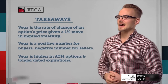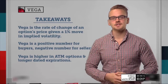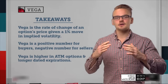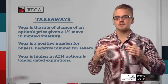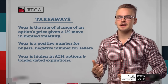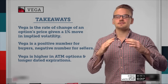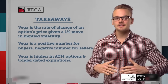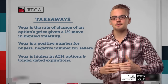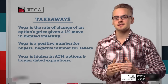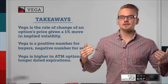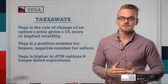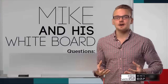Last but not least, Vega is higher in at-the-money options and longer-dated expirations, because both have more extrinsic value. On the bell curve, the 45-day graph is clearly higher than the 10-day graph. When you get to expiration and those bell curves flatten, there's a much bigger jump from 45-day to zero than from 10-day to zero. That's why Vega must be higher in longer-term expirations — there's more extrinsic value to deflate.